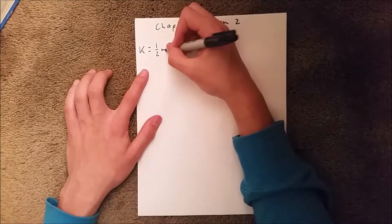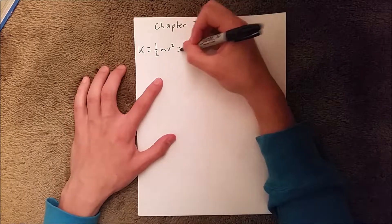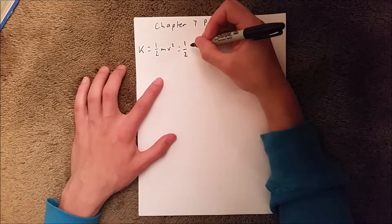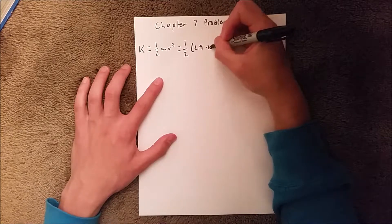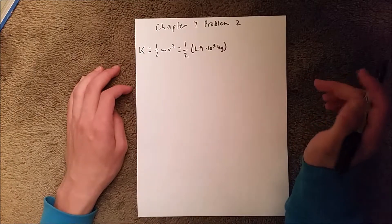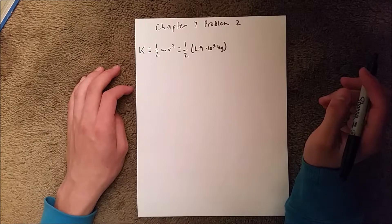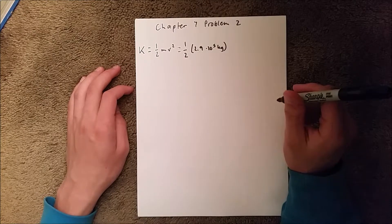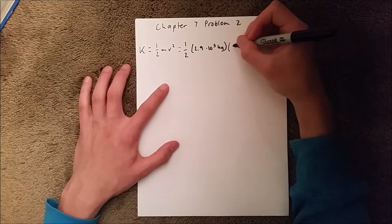Which is our fundamental equation, and so we can plug in our given values. The one thing you'd be careful of is we are given that it has a speed of 11.2 kilometers per second, so we need to remember to multiply that by a thousand to make it meters per second.